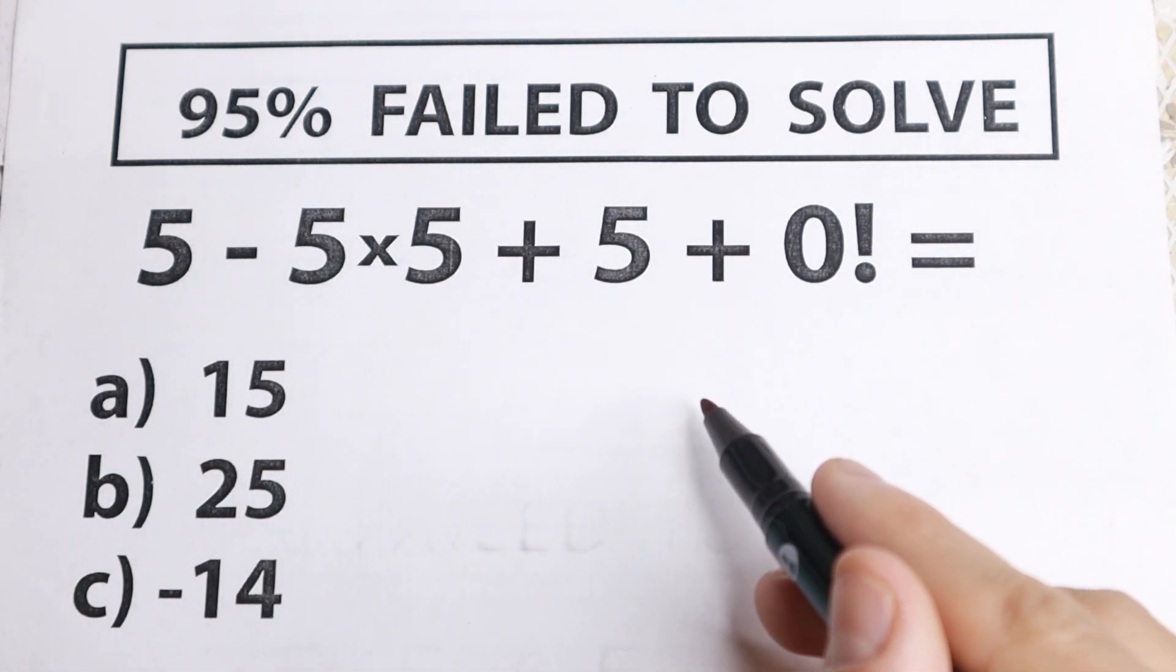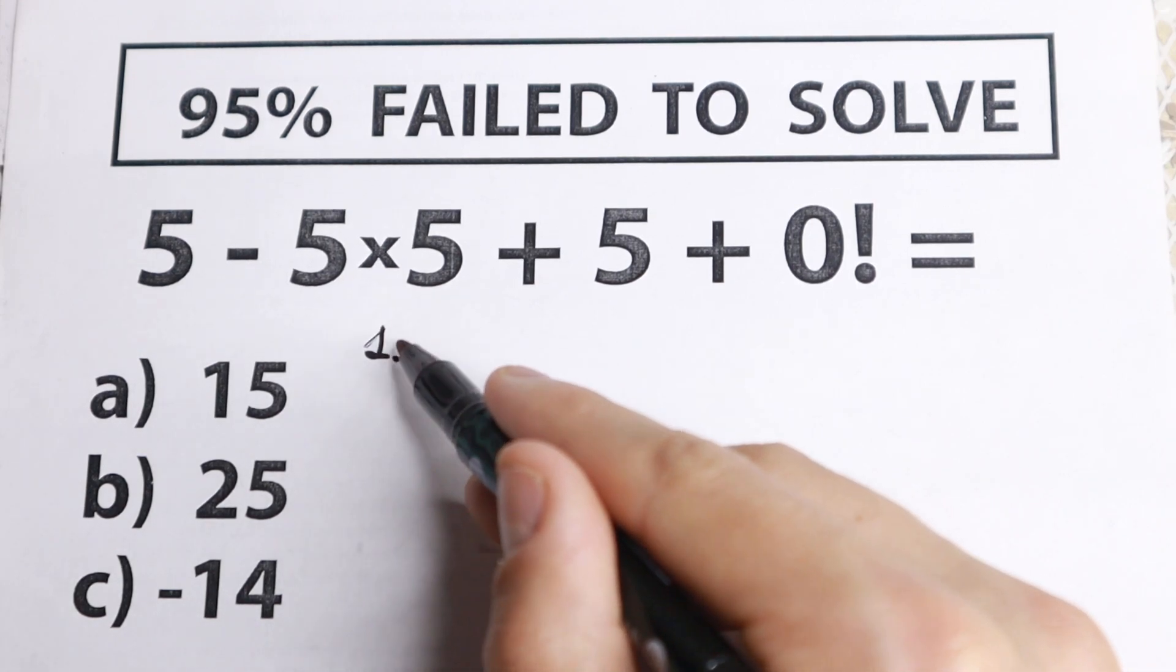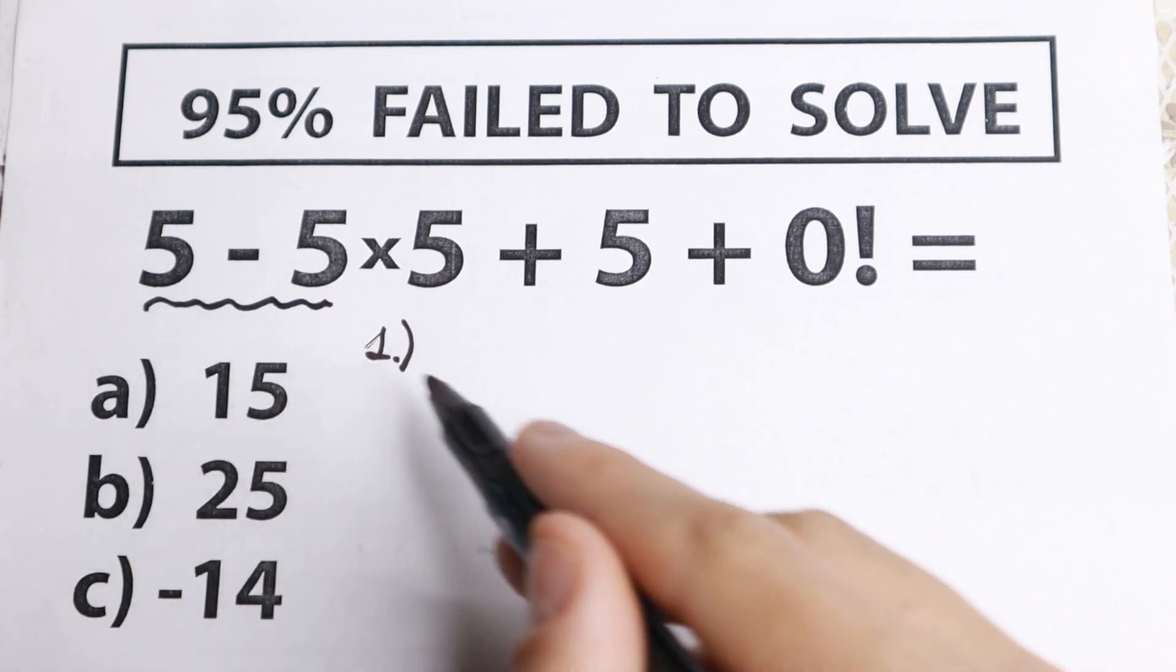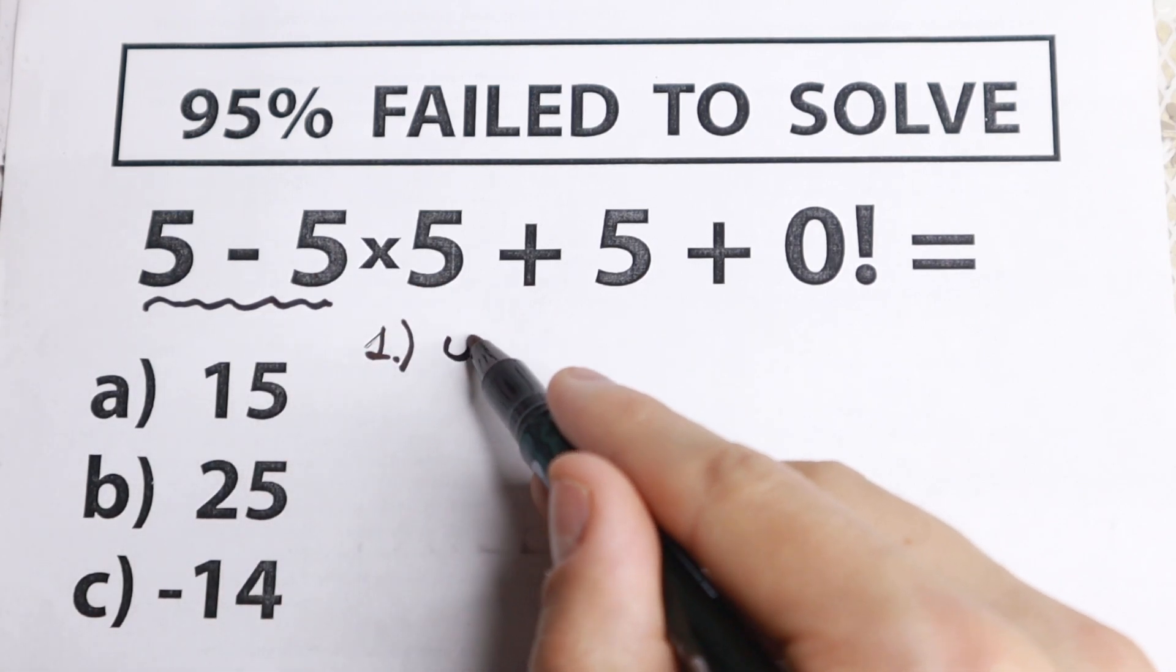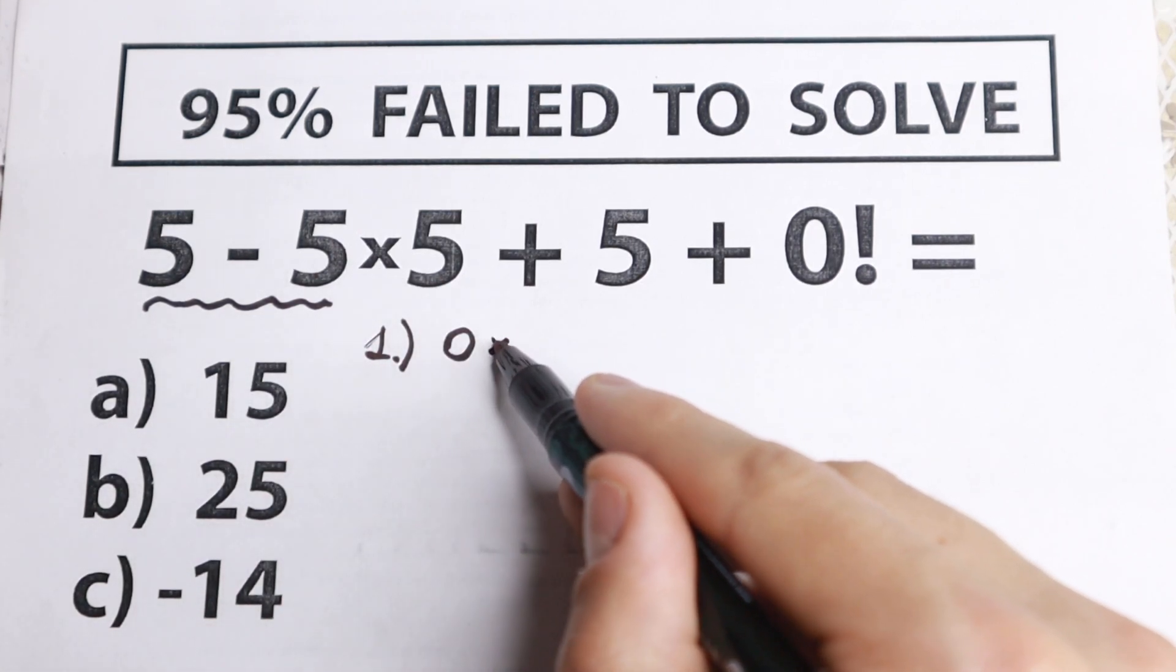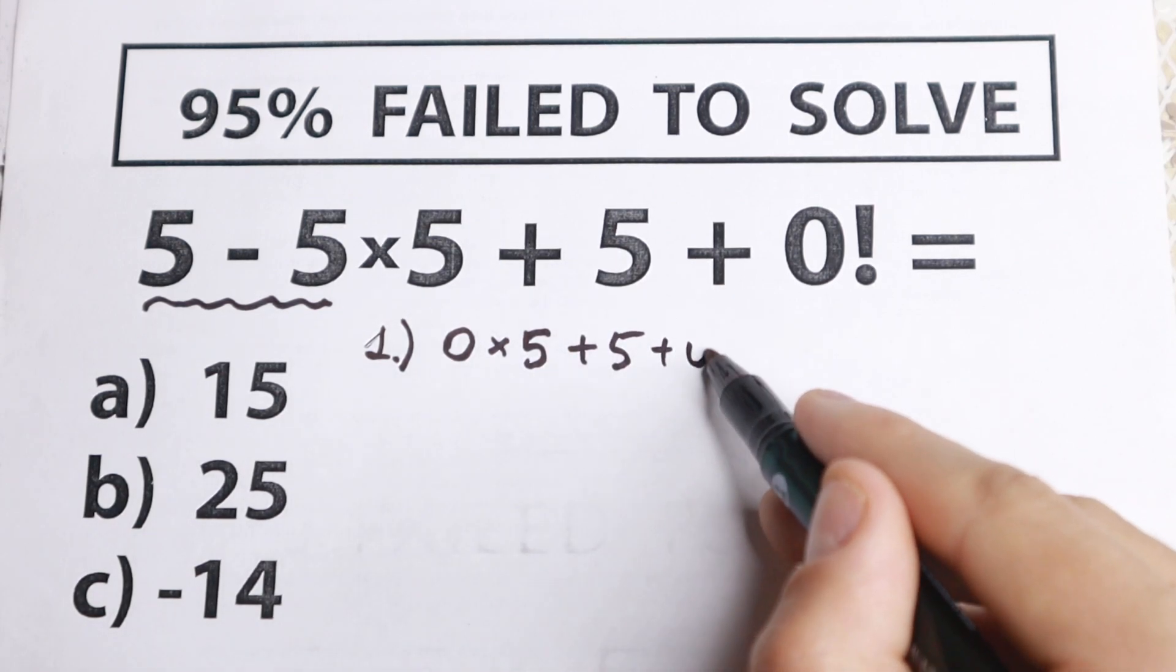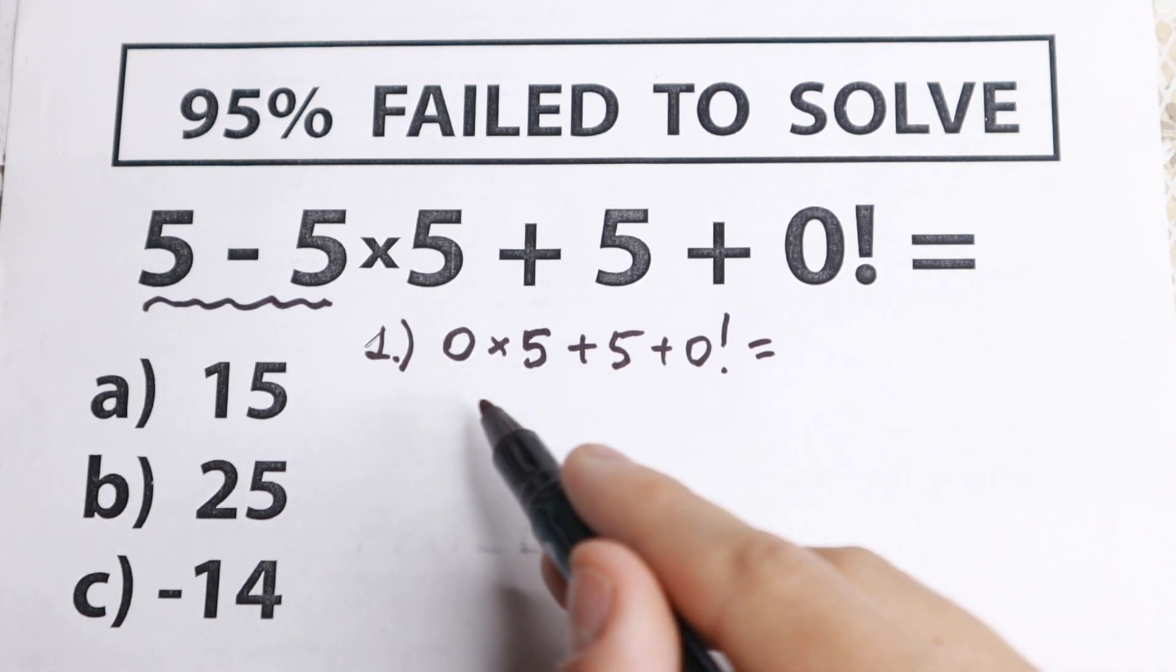The first and wrong way to solve it is to start with subtraction. If we subtract 5 - 5, we have 0, and we're left with 5. So 0×5, and we have the same on the right, plus 5 and plus 0 factorial.